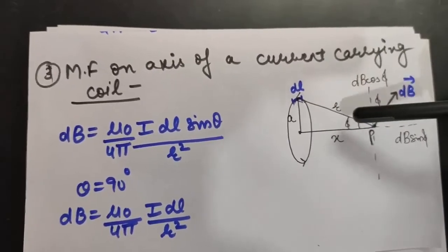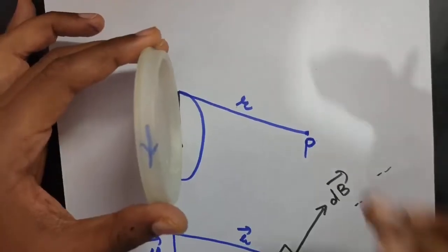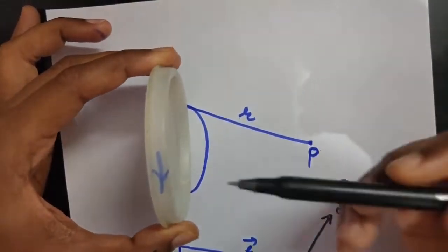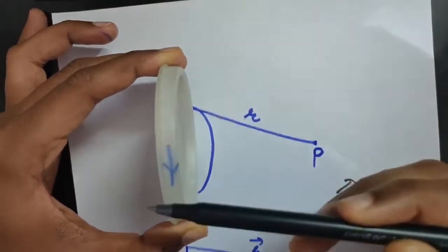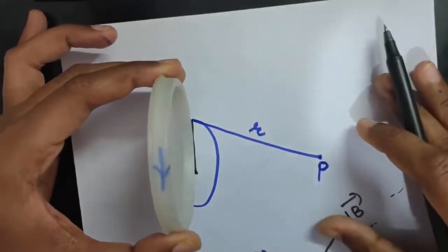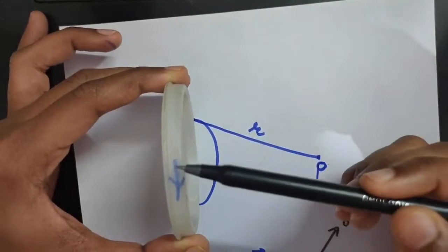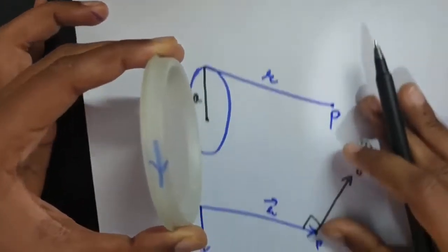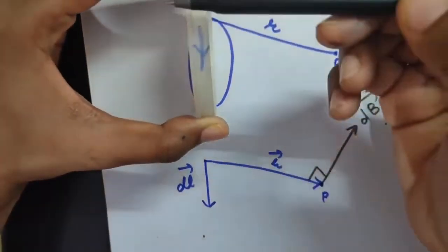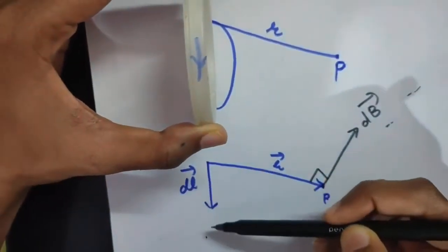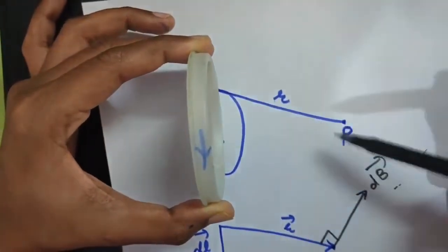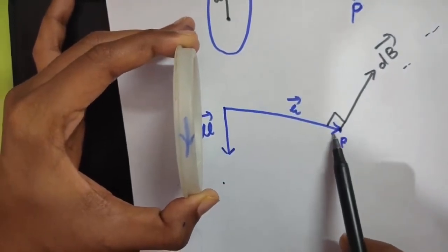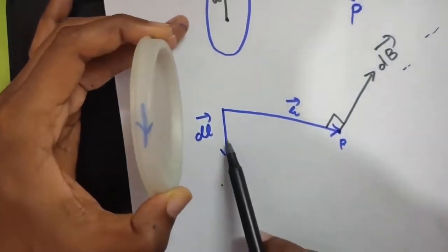To exactly understand this, look here — this coil is placed like this. Current is flowing in anti-clockwise direction, so this arrow shows the direction of current. The direction of DL is downwards because current is flowing like this. This is R, similarly R will be drawn like this from point P and it is pointing towards P. So this is DL and this is R.